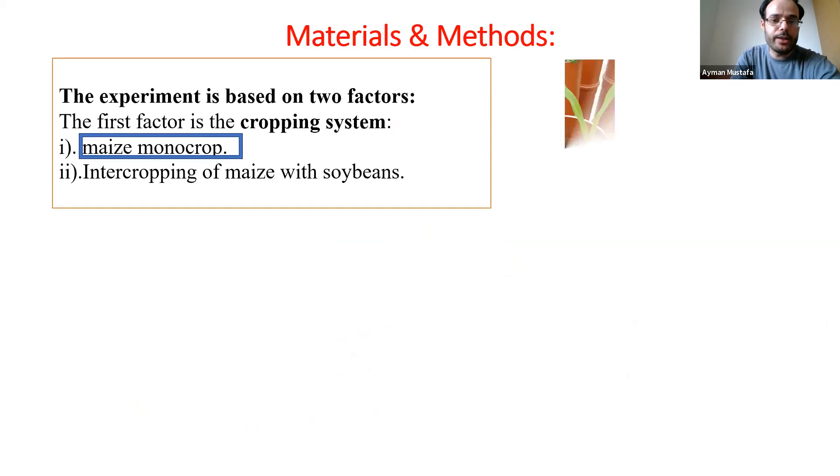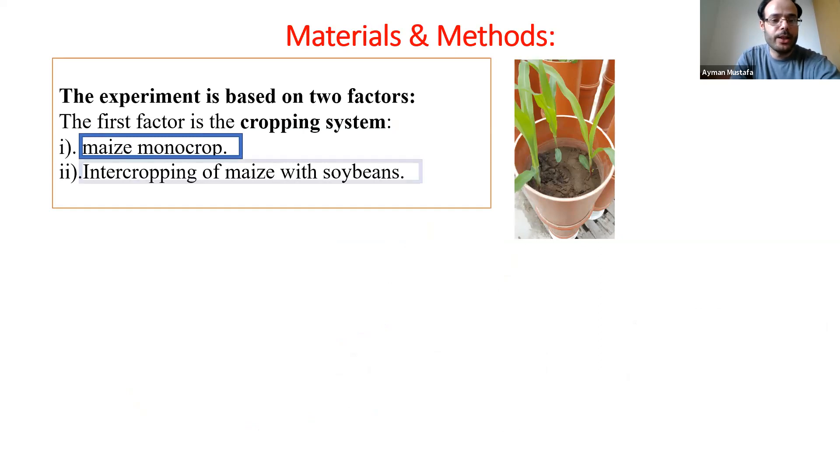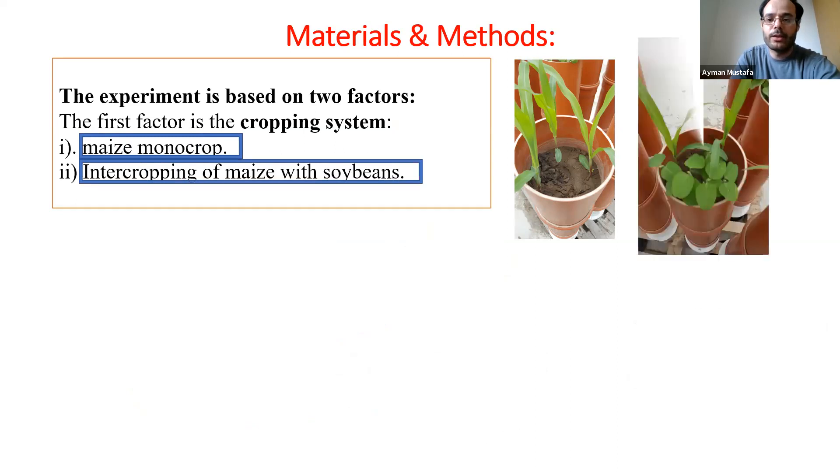We have maize monocropping alone. I've sown three seeds in each pot. And intercropping of maize and soybean together in one pot.